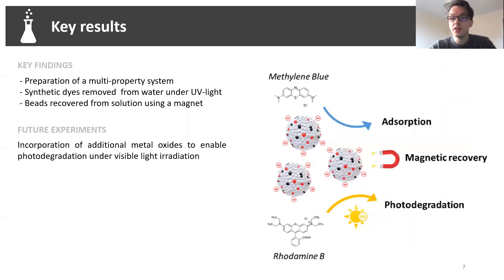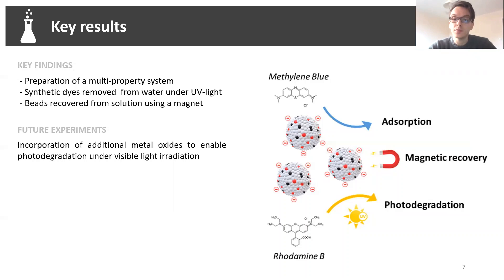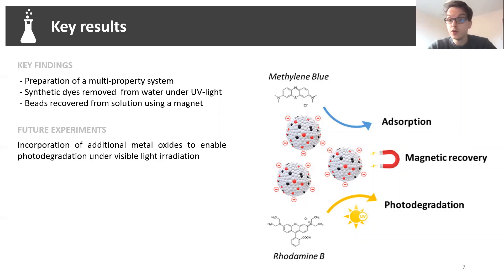The system was then used for water treatment. We tested with two model dyes: methylene blue and rhodamine B. We observed during our experiments that we could easily adsorb methylene blue on the surface of the beads, and we could photodegrade rhodamine B using UV light. After the treatment, it was possible to recover the beads with a magnet and reuse them again and again.